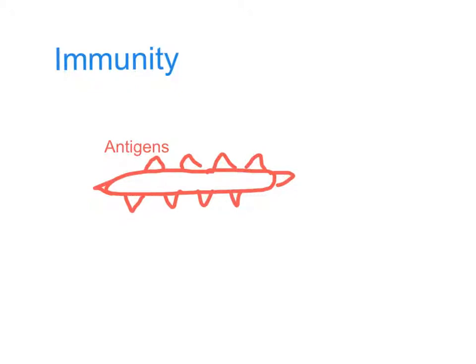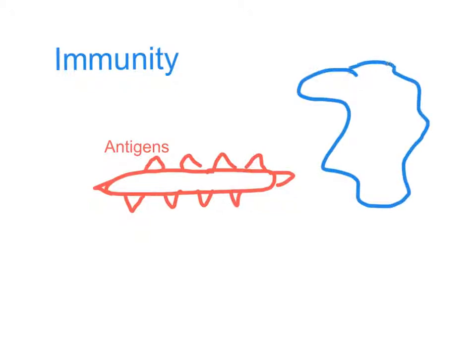Well it's down to our white blood cells. Our white blood cell comes along and it has to figure out how to produce the right antibodies. Now the white blood cell isn't intelligent — it can't see the bacterium, it doesn't know what sort of antigens it's got on it. So all it can do is try different shapes.